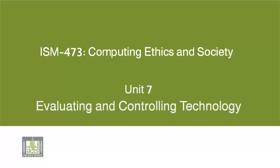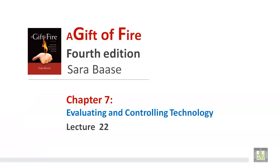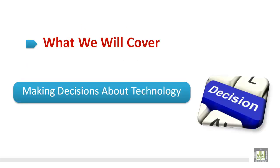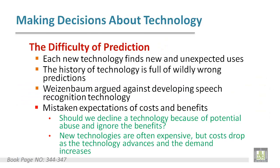Hello everybody, this is lecture 22 of our course Computing Ethics and Society. We are still in Chapter 7: evaluating and controlling the technology. In this lecture we are going to discuss making decisions about technology.